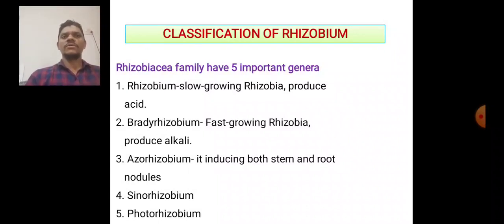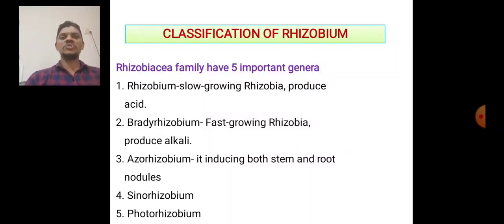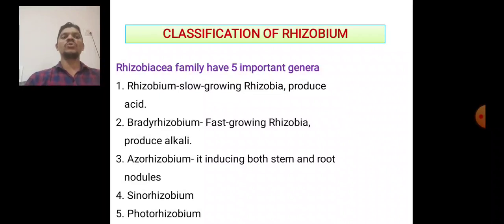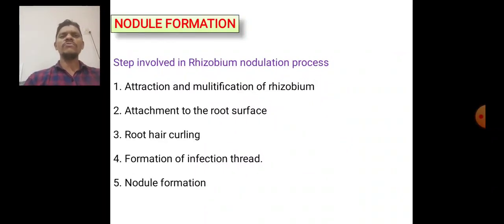The classification of Rhizobium: the Rhizobiaceae family has five important genera. Rhizobium — slow-growing Rhizobia that produce acid. Bradyrhizobium — fast-growing Rhizobia that produce alkali. Azorhizobium — inducing both stem and root nodules. Sinorhizobium and Photorhizobium.